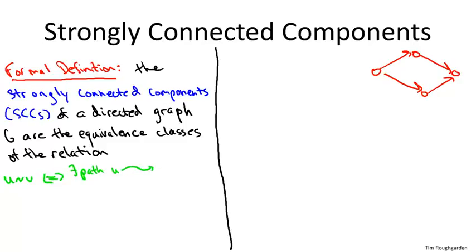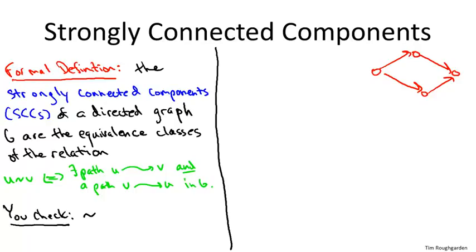I won't bore you with the verification that this is an equivalence relation. It's reflexive — there is a path from every node to itself. It's symmetric — by definition we're saying the vertices are mutually reachable from each other. And it's transitive — you prove transitivity by pasting paths together, and it works just as you'd expect.